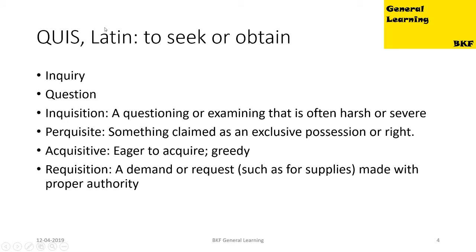The next root is 'ques', it has a Latin origin and it means to seek or to obtain. Words we get: 'inquiry' — a noun we all know. 'Question' is a noun again. 'Inquisition' is a noun — a questioning or examining that is often harsh or severe. 'Perquisite' is something claimed as an exclusive position or privilege; it's a noun. 'Acquisitive' is an adjective meaning eager to acquire or greedy. 'Requisition' is a noun — a demand or request, such as for supplies, made with proper authority.